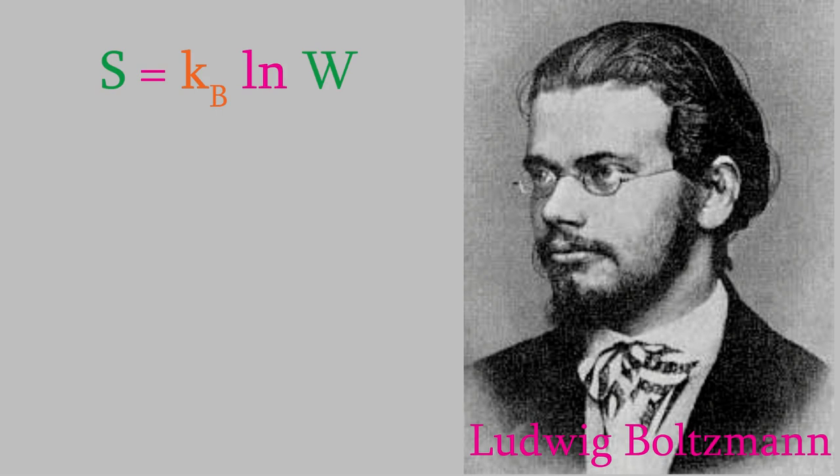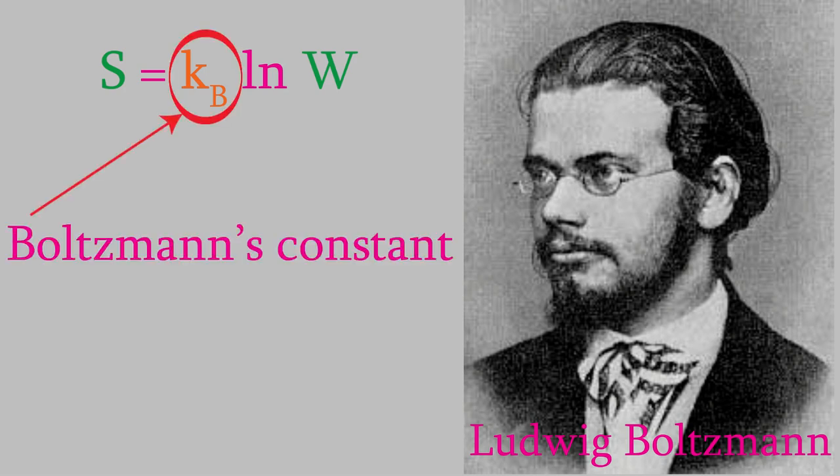The entropy has the symbol S. We've seen the constant kB before. It's called the Boltzmann constant, and you might recall that it's just equal to R, the gas law constant, divided by Avogadro's number.